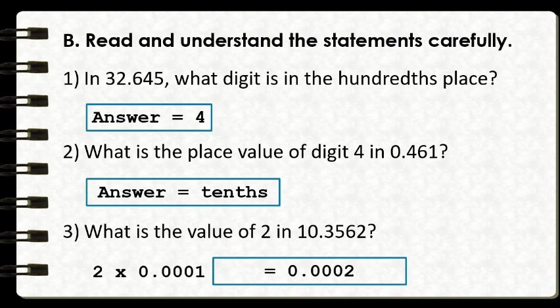Number three: what is the value of 2 in 10 and 3,562 ten-thousandths? We first identify the place value of the digit 2. It occupies the fourth place from the right of our decimal point — tenths, hundredths, thousandths, ten-thousandths. We then multiply 2 by its corresponding place value of 1 ten-thousandths, so 2 times 1 ten-thousandths equals 2 ten-thousandths. I hope you now understand how to identify the place value and value of a digit in a given decimal number.